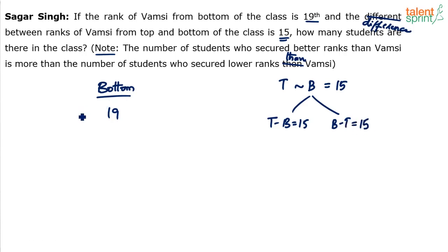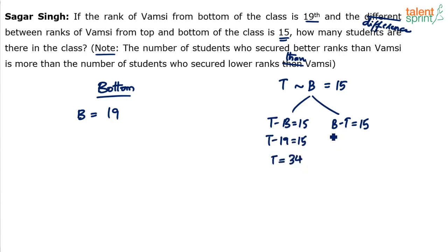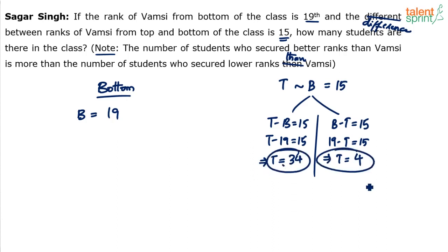We already know that B, the rank from bottom, equals 19. Substituting, in case 1: T minus 19 equals 15, so T equals 15 plus 19, which is 34. In case 2: 19 minus T equals 15, so T equals 19 minus 15, which is 4.